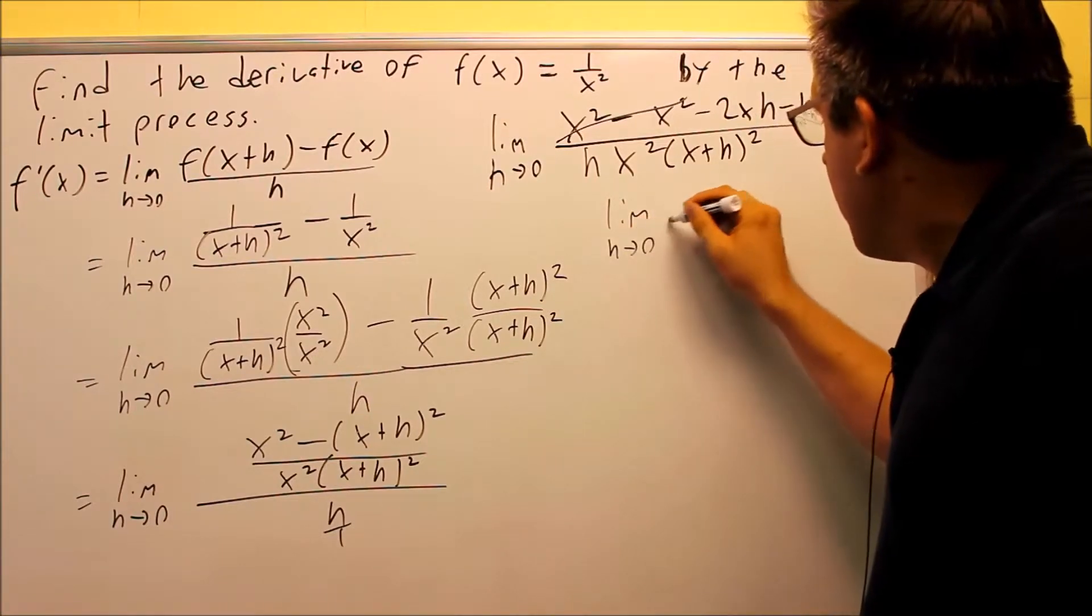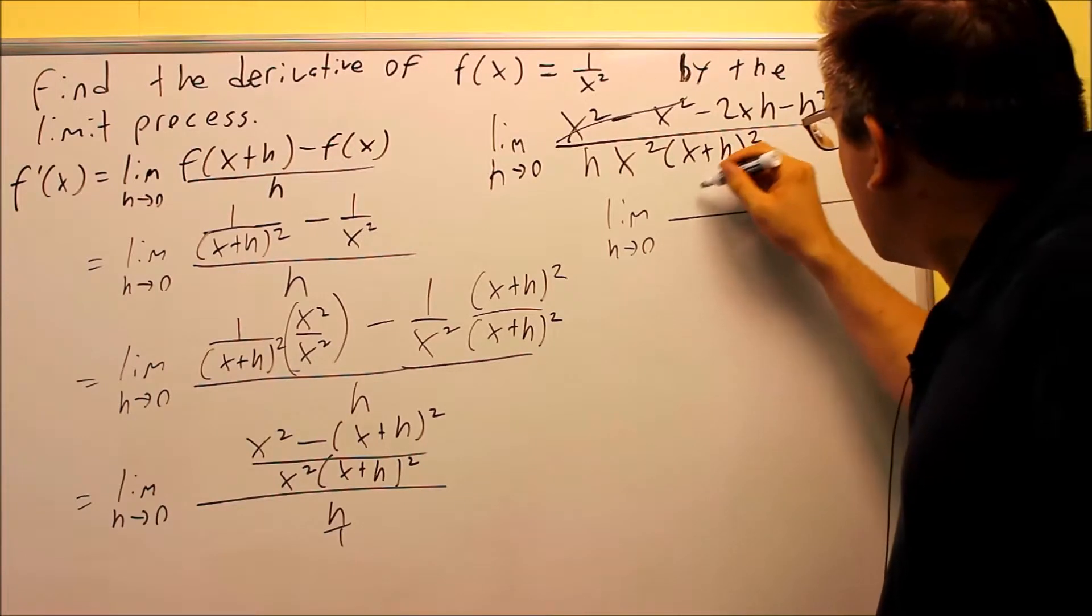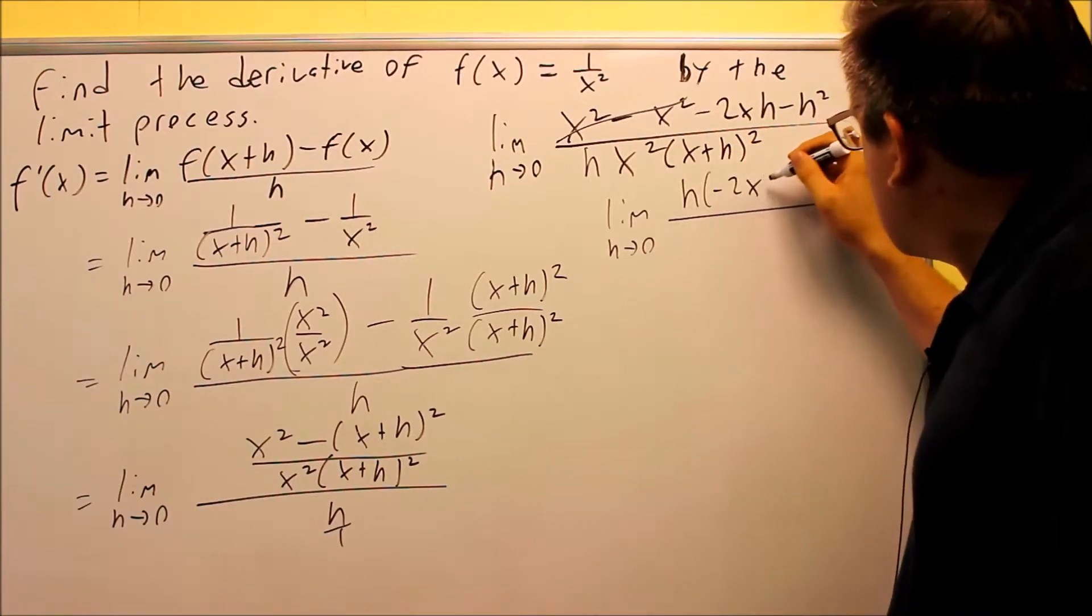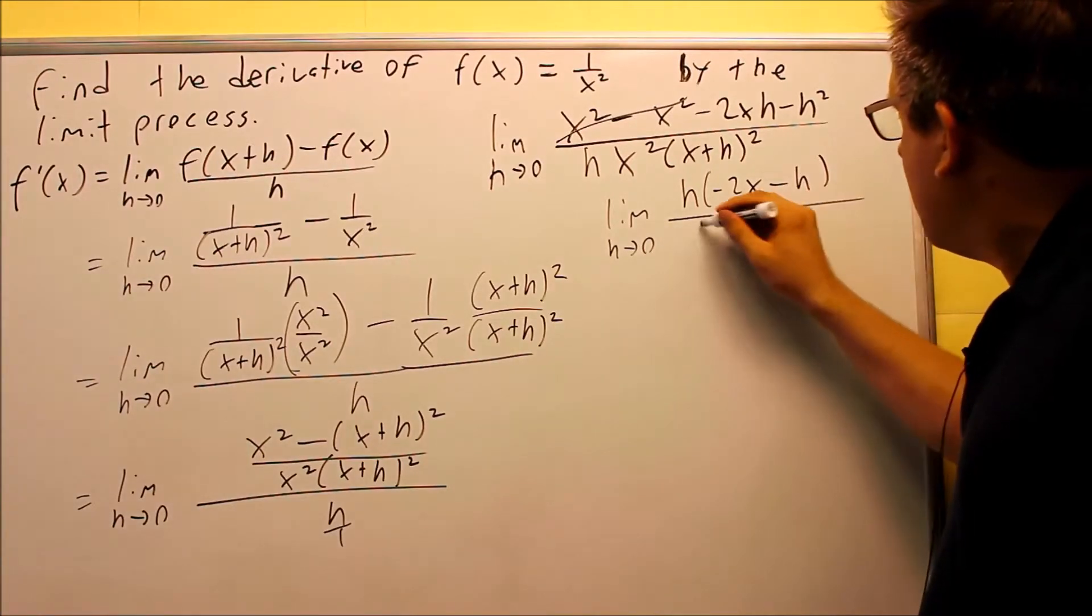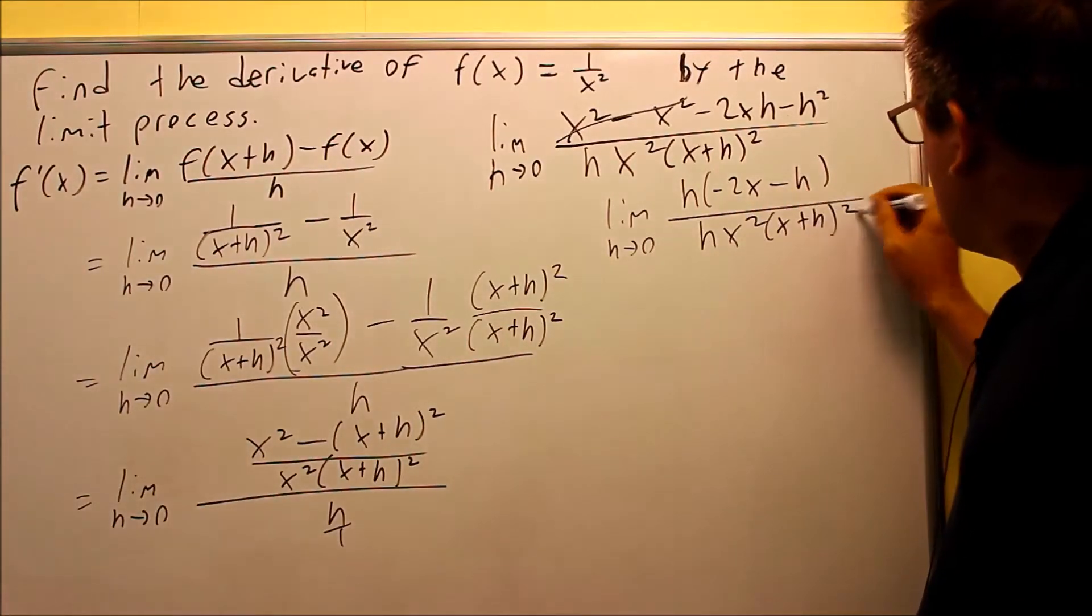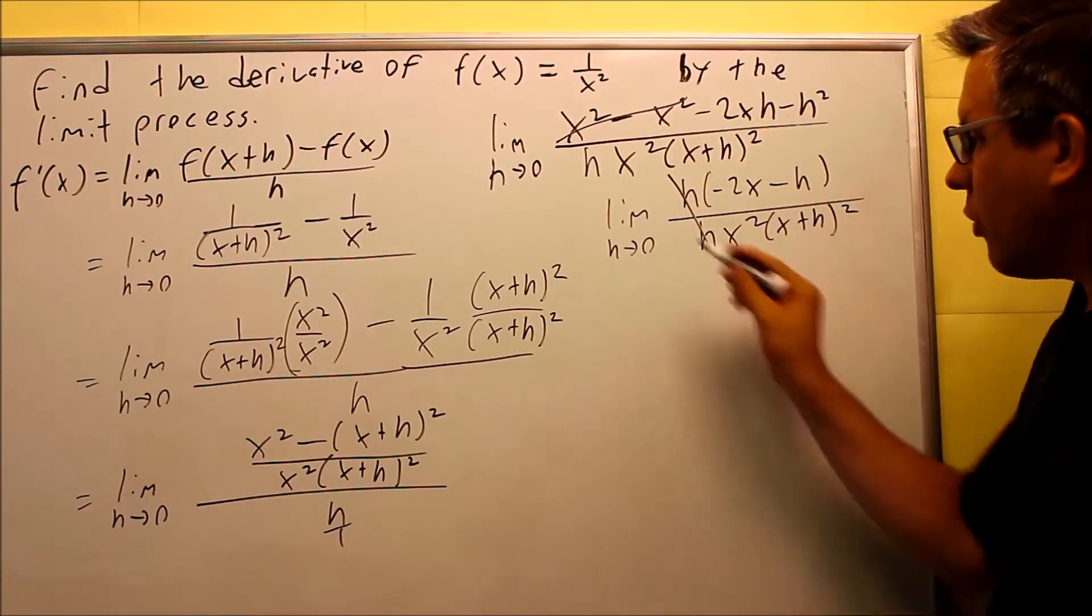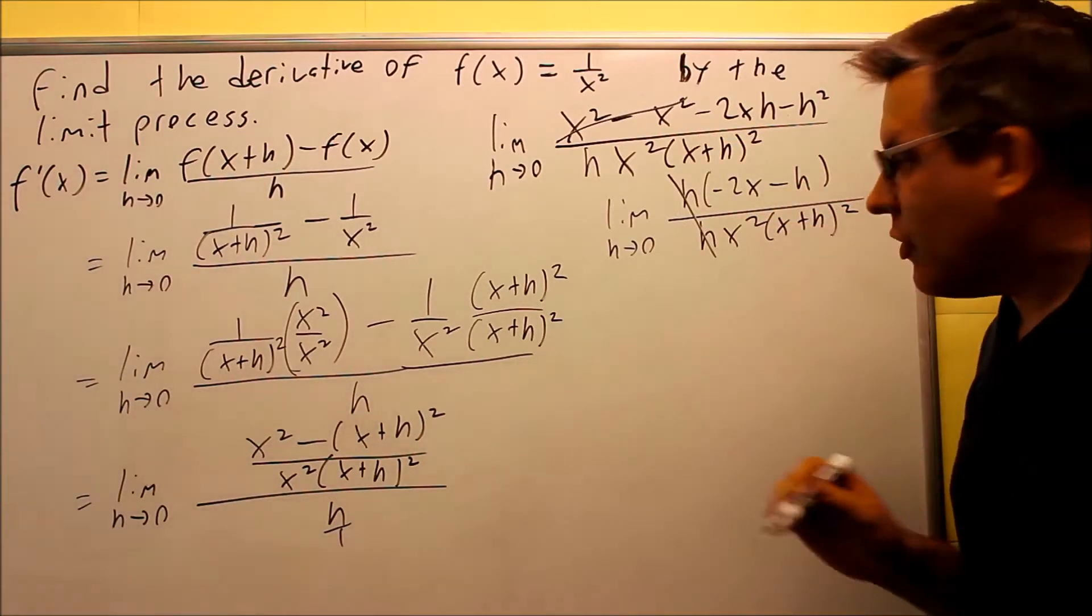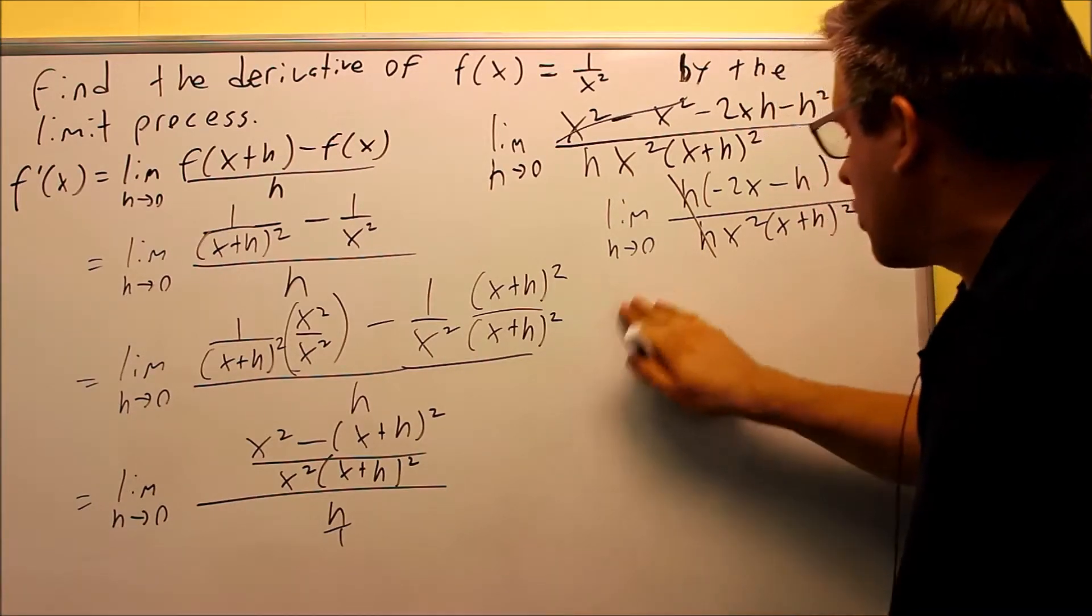Then, what you can do is with the remaining part, you can pull out an h. So we're going to factor out an h there. We get negative 2x minus h down below. We have the same thing. And now, we have an h that we can cancel, so that way, again, we're no longer worrying about division by zero happening.